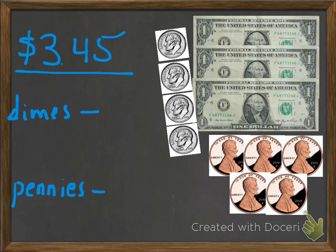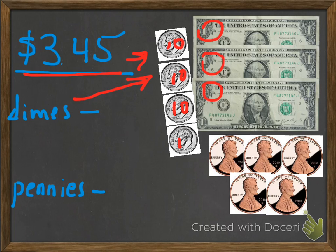Let's take a look at this one. If we have 3 dollars and 45 cents, here's our money. We have 3 ones — a dollar here, a dollar here, and a dollar here. Then we have dimes, and the dimes represent tenths — that's 10 cents, 10 cents, 10 cents. It's only part of a whole dollar. There are 10 tens in a whole dollar, so really we have 40 cents, or 4 tenths of a dollar.